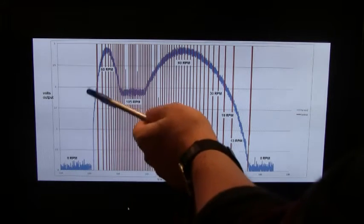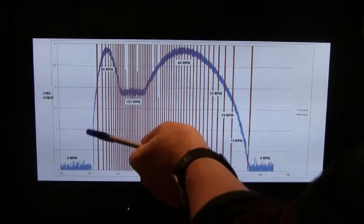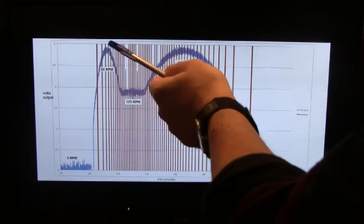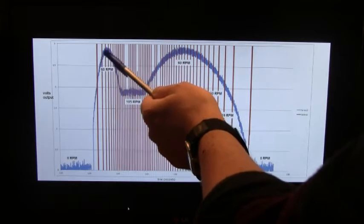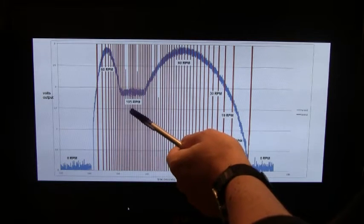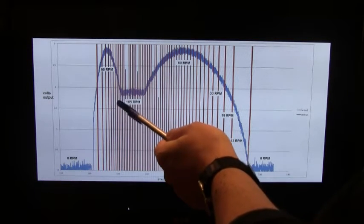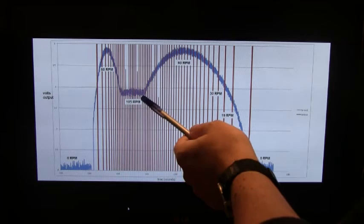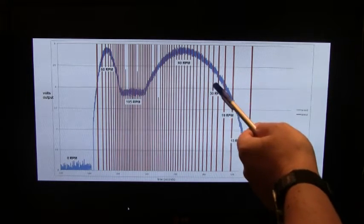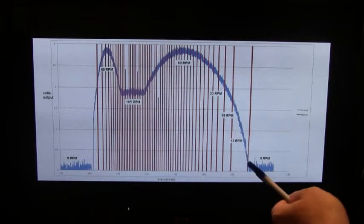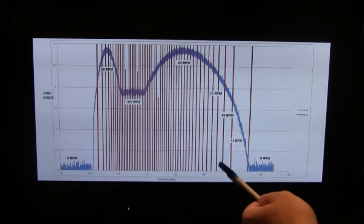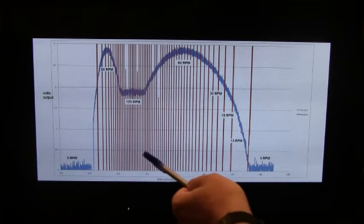When it spins up to 105 RPM, we go from the out-of-phase condition to the in-phase condition. So we reach a maximum voltage here at 60 RPM, then we start heading back towards out-of-phase, which at 105 RPM is the maximum on the turntable. So it just sits there until we turn the turntable off, and then it slowly spins down through 60 to 30 to 19 to 13, back down to zero RPM. And the red lines are actually some markers that we've put in to mark the RPM.